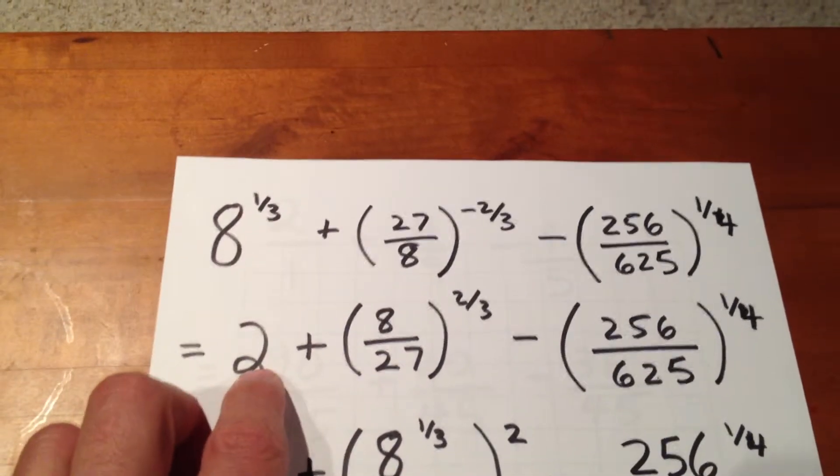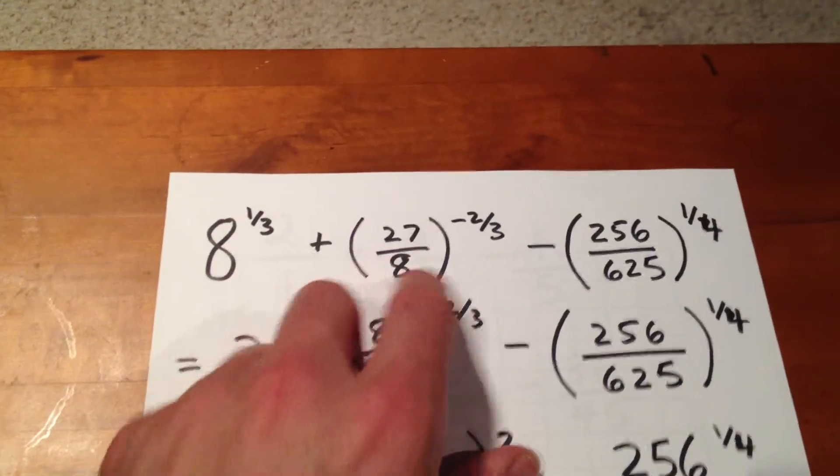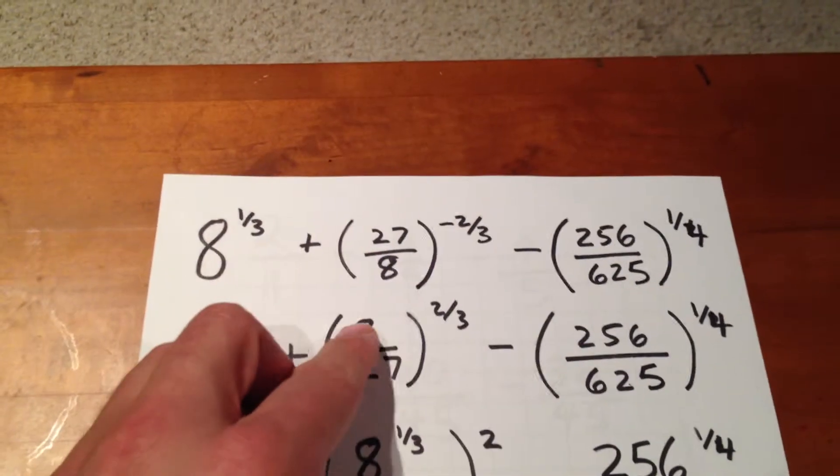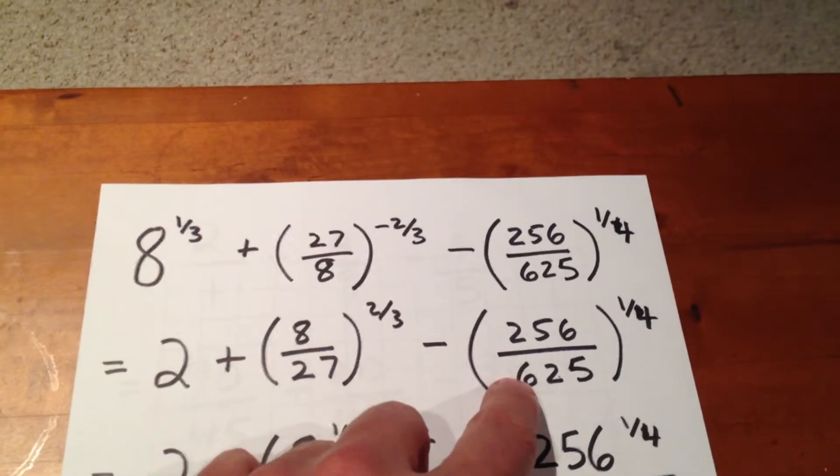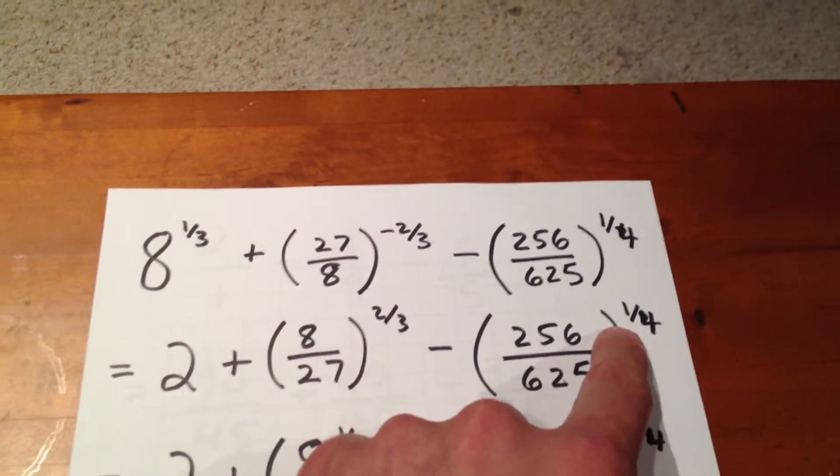We know 8 to the one-third is 2. 27 over 8 to the negative two-thirds becomes 8 over 27 to the positive two-thirds. And we've got 256 over 625 to the exponent 1 over 4 still.